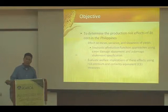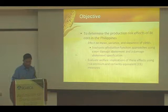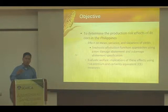From these effects, we can use those mean-variance-skewness estimates to look at risk-based welfare measures like risk premium and certainty equivalence, which give an idea of whether farmers are better off with a certain risky technology.